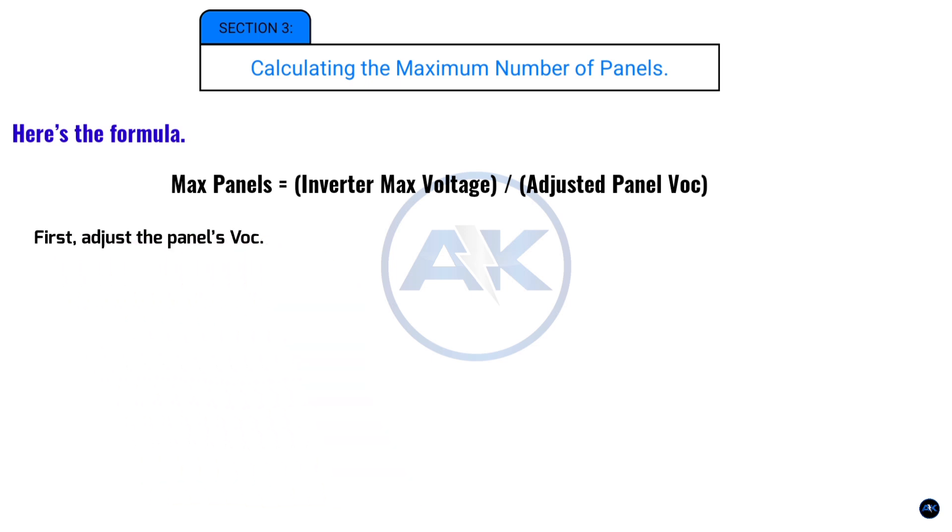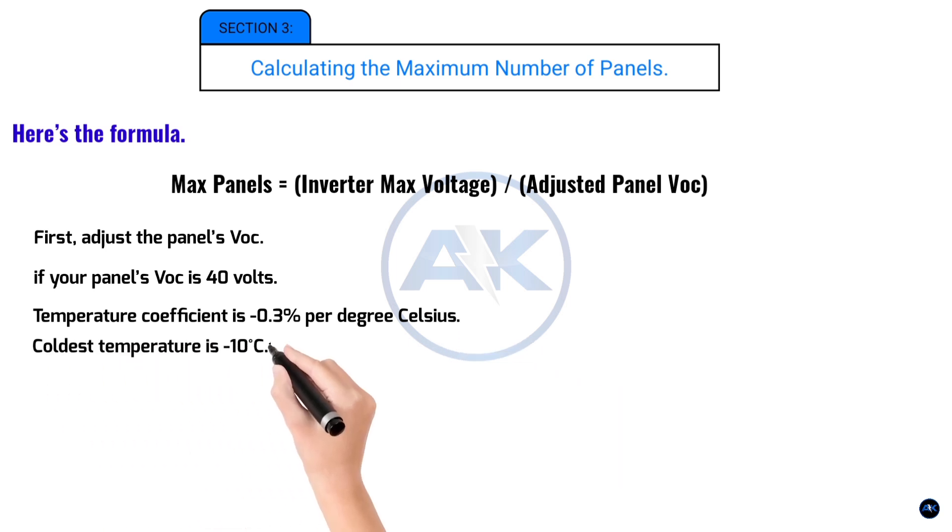First, adjust the panel's VOC for the coldest temperature in your area. For example, if your panel's VOC is 40 volts and the temperature coefficient is negative 0.3% per degree Celsius and the coldest temperature is minus 10 degrees Celsius, the adjusted VOC would be higher.